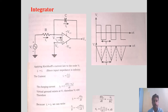This is the circuit of integrator. The series resistance will be R and in the feedback path, we will be having a capacitor C.